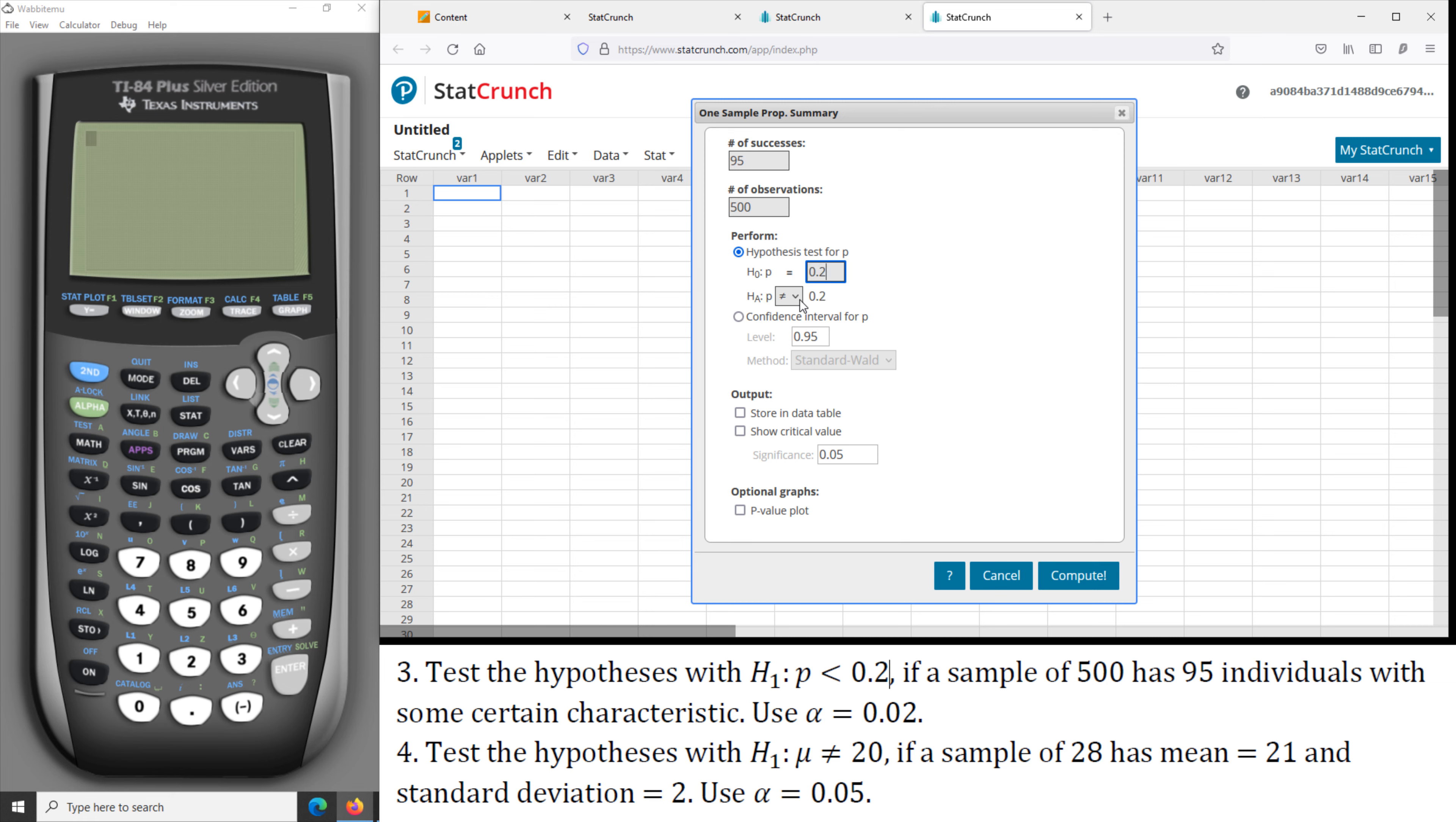Alternative hypothesis, we're going to choose less than. That's very important, we have to specify that. And alpha is actually 0.02.